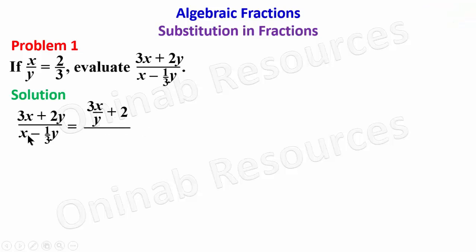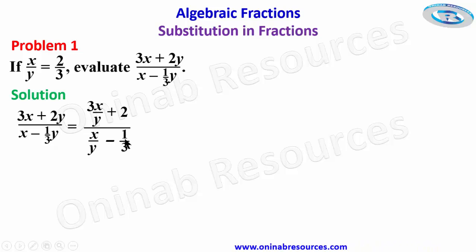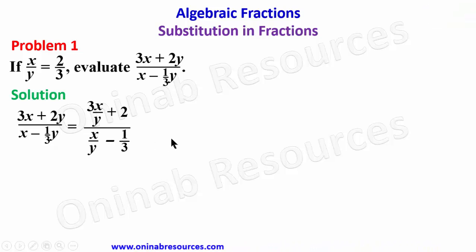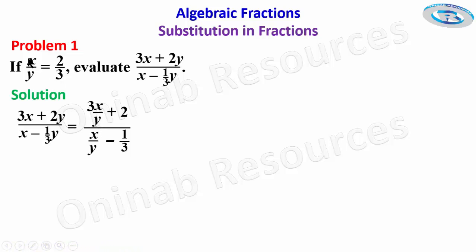Then for the denominator, x divided by y gives x over y. And 1 over 3y divided by y gives 1 over 3y, so we now have it as minus 1 over 3. Then we substitute 2 over 3 for x over y.